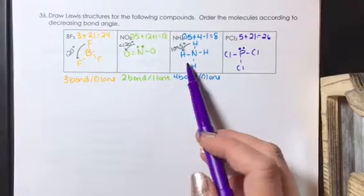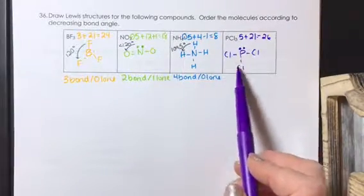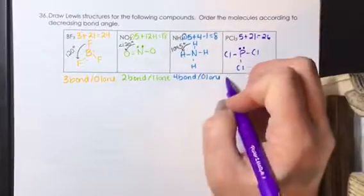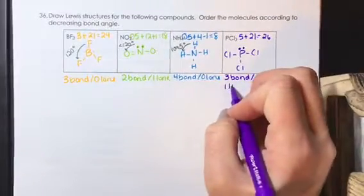Similar to NH4, the PCl3 molecule has one, two, three, four electron regions, but there are three bonding regions and one lone pair.